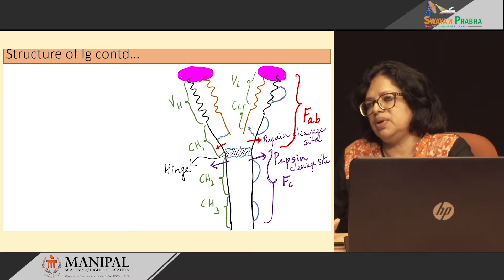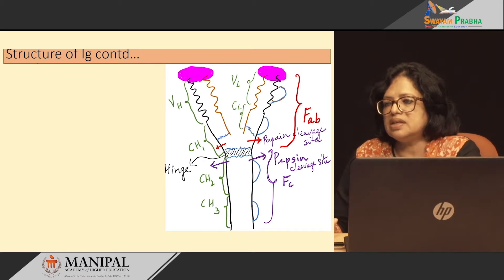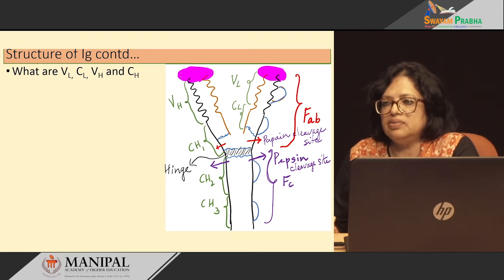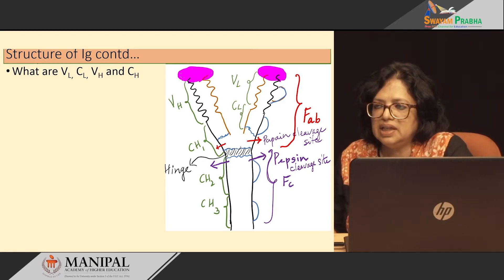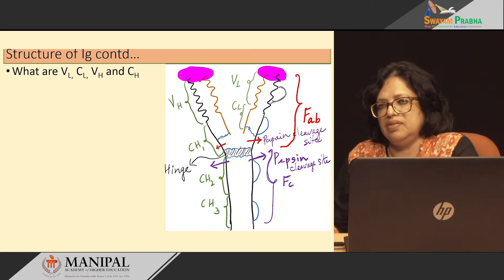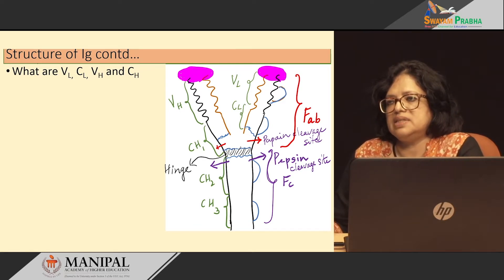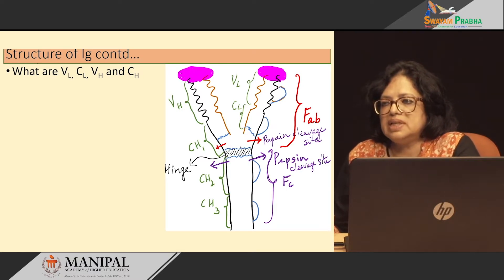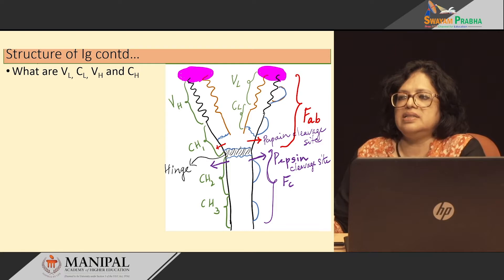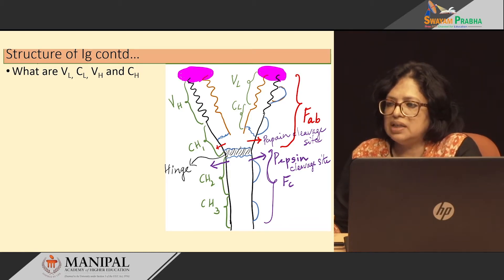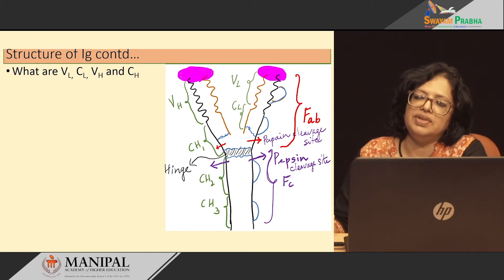Now look at the structure of immunoglobulin once again. We see some new terminologies: VH, CH1, CH2, CH3, and so on — these are the domains of the light and heavy chains. VL represents the variable region of the light chain; CL represents the constant region of the light chain. Similarly, in the heavy chain we have four domains: variable heavy chain, constant heavy chain 1, constant heavy chain 2, and constant heavy chain 3.